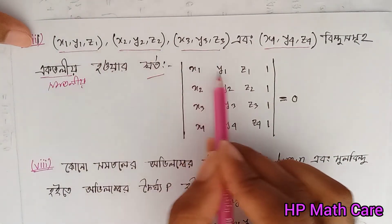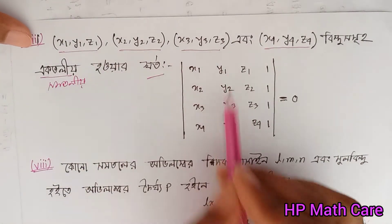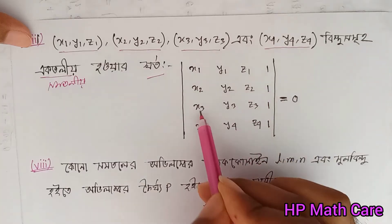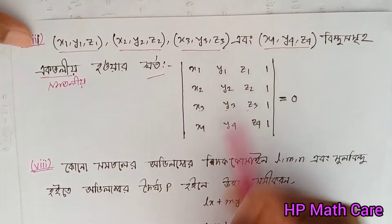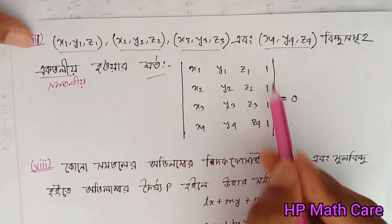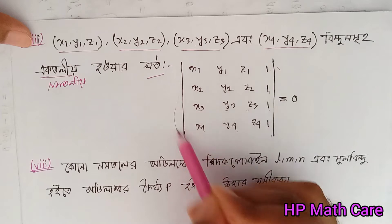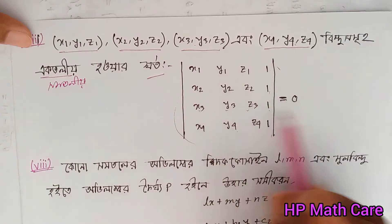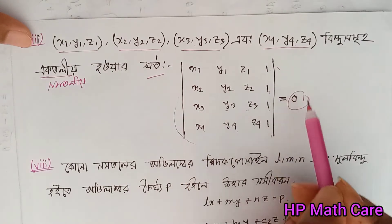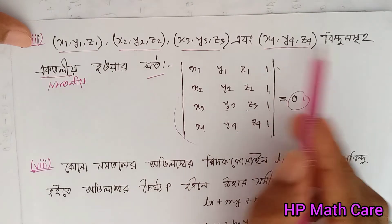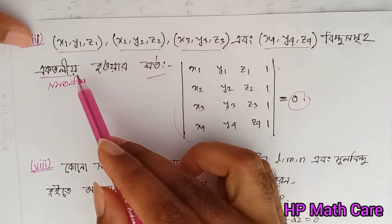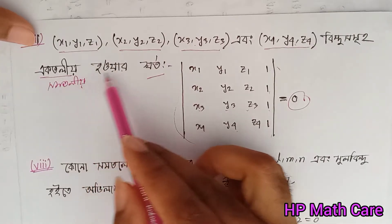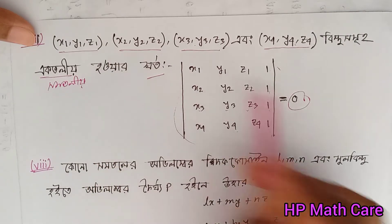x1, y1, z1, x2, y2, z2, x3, y3, z3, x4, y4, z4. 0 is equal to 1, then you should mirror this — now you should see this is equal to 1.